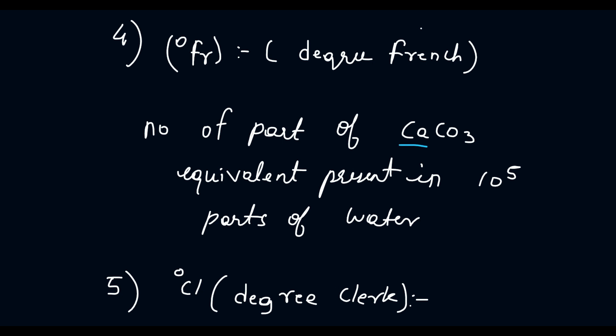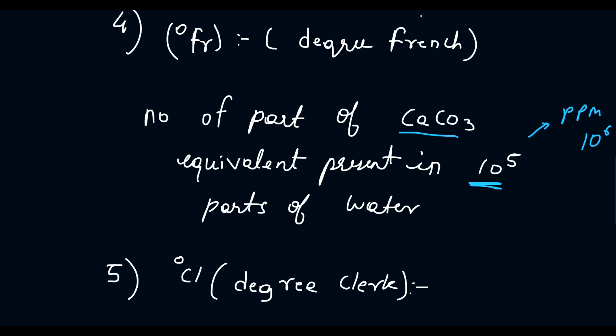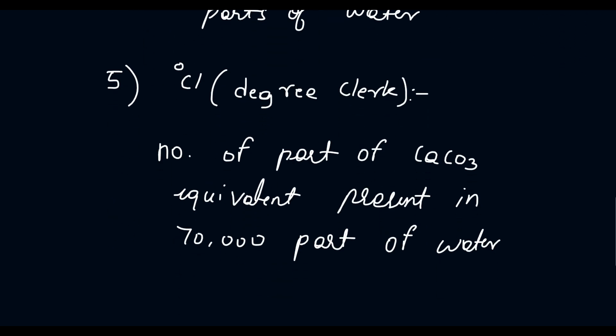Next is degree French. Degree French is the number of parts of CaCO₃ equivalent present in 10 raised to 5 parts of water. Note that in PPM there is 10 raised to 6 — parts per million — whereas here it is 10 raised to 5.